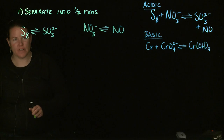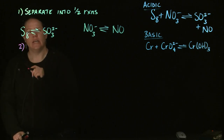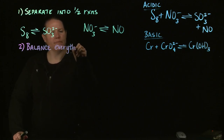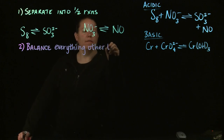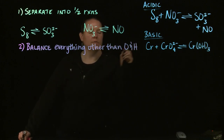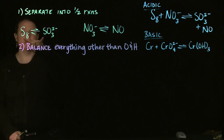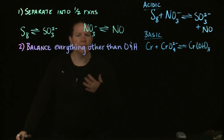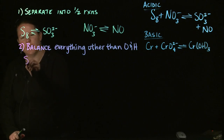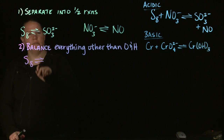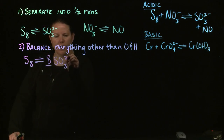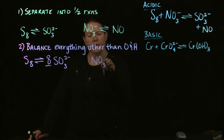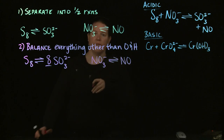The next thing we're going to do — and I'm going to do these in different colors so that you get some comparison here — is we're going to balance everything other than O and H. That means the same major element that you based the separation of the half reactions on needs to be balanced — the same on both sides. So here we have S8, and I have eight S's on this side and one on that side, so I need an eight in front of that SO3 2-minus. And I have one of each N on either side, so that is already balanced for everything other than O and H.